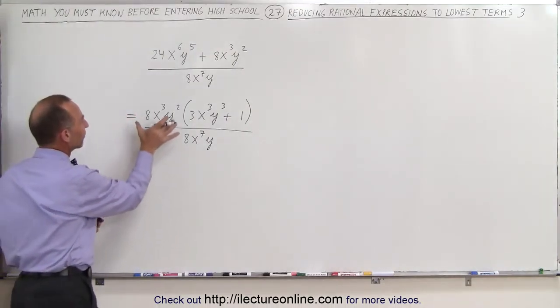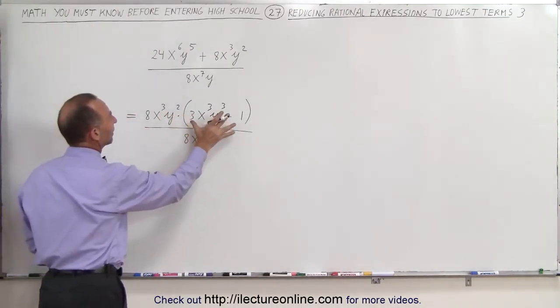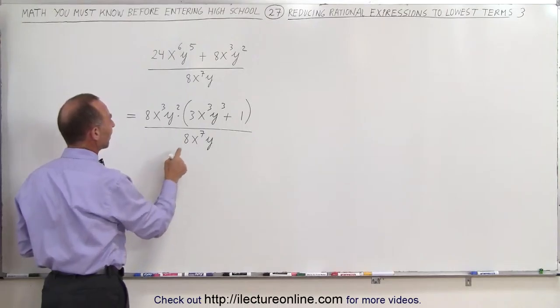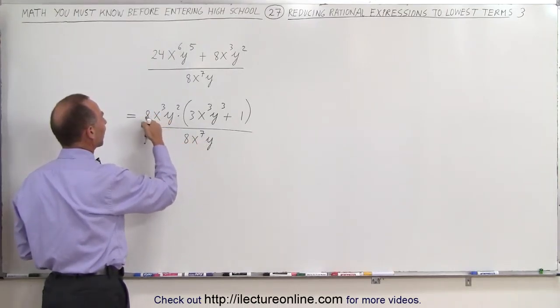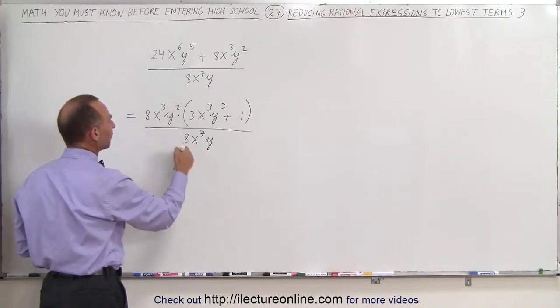But now notice that we have this term multiplied by this binomial, which means that I can factor anything out or simplify anything by dividing both the top and the bottom by a common factor here.